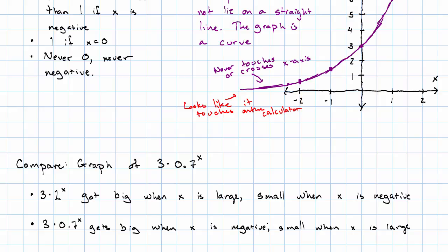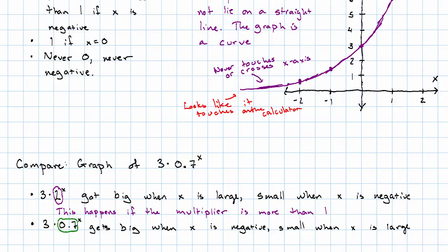What is it that makes the difference between them? In this first example, the multiplier was bigger than one. In the second example, the multiplier was less than one, but still positive.